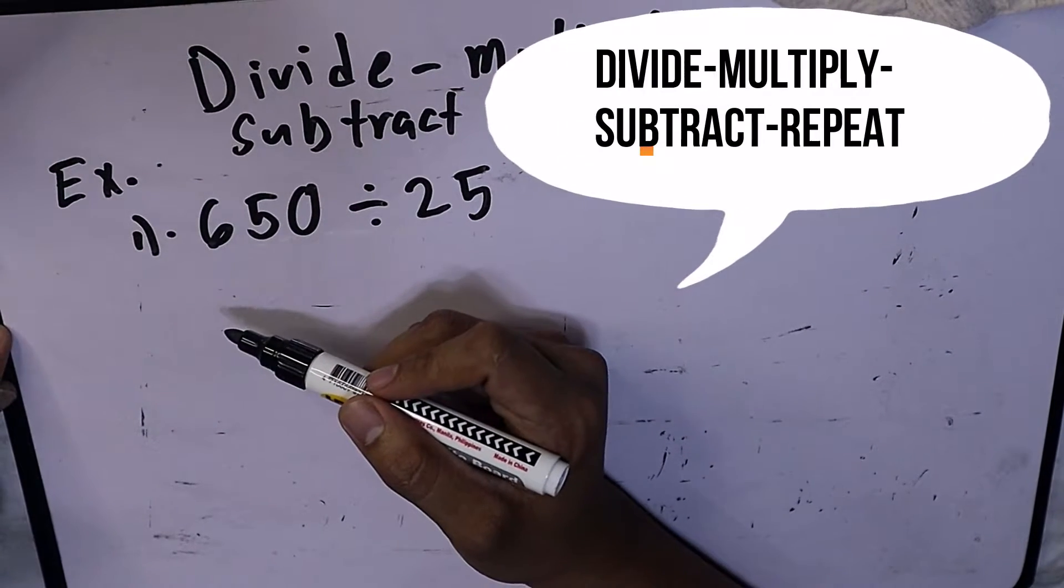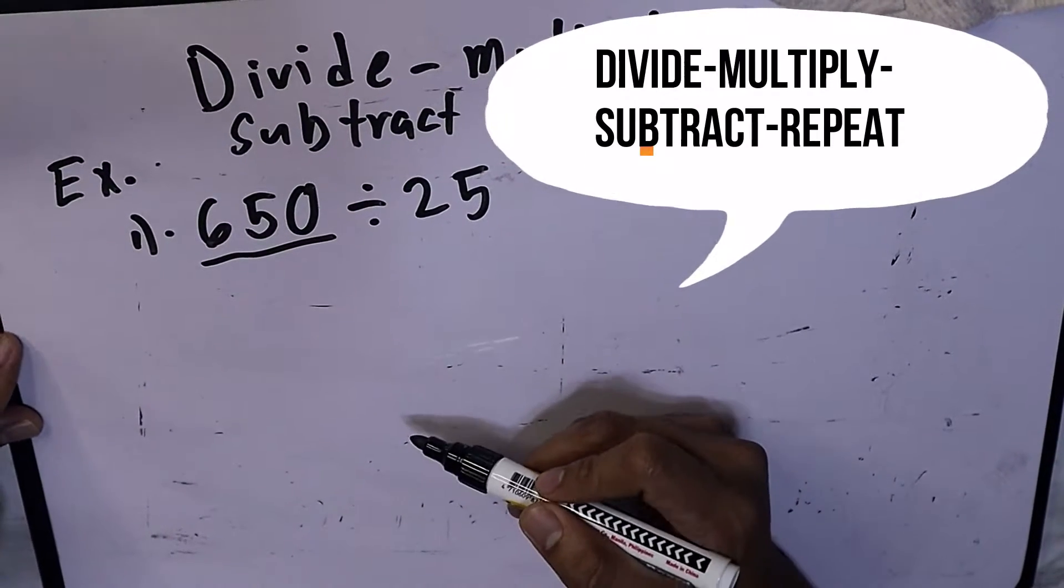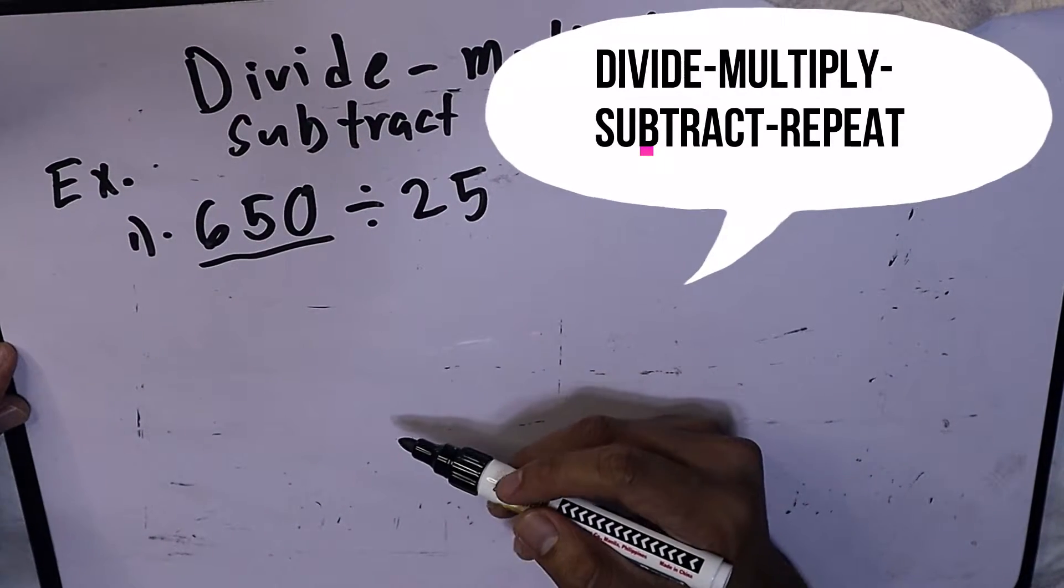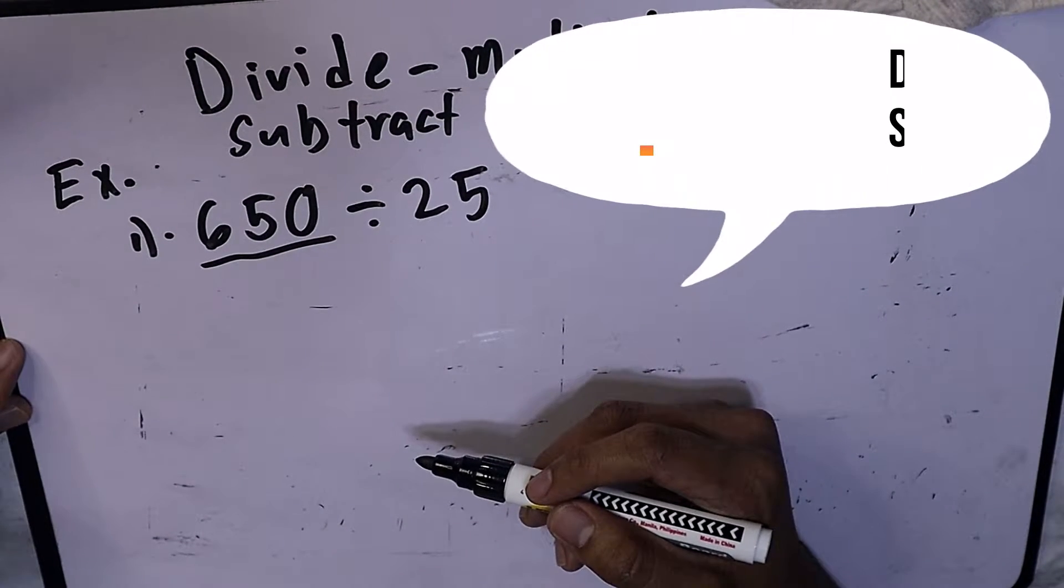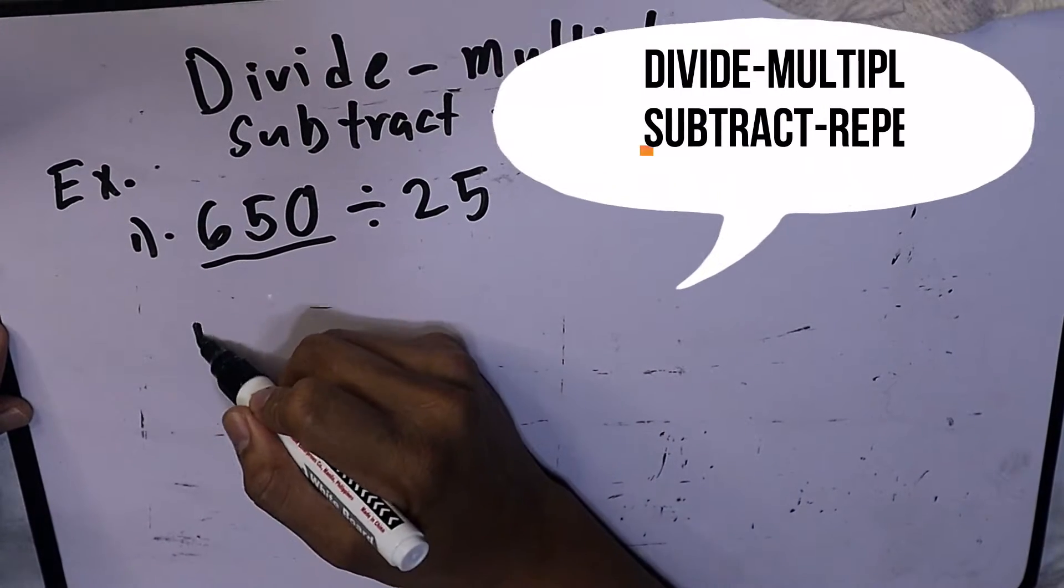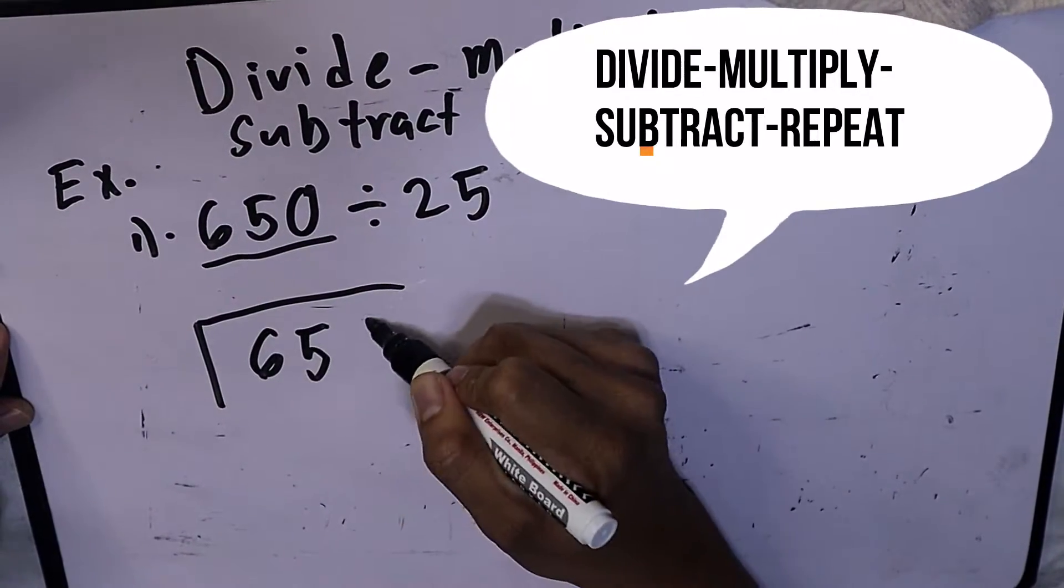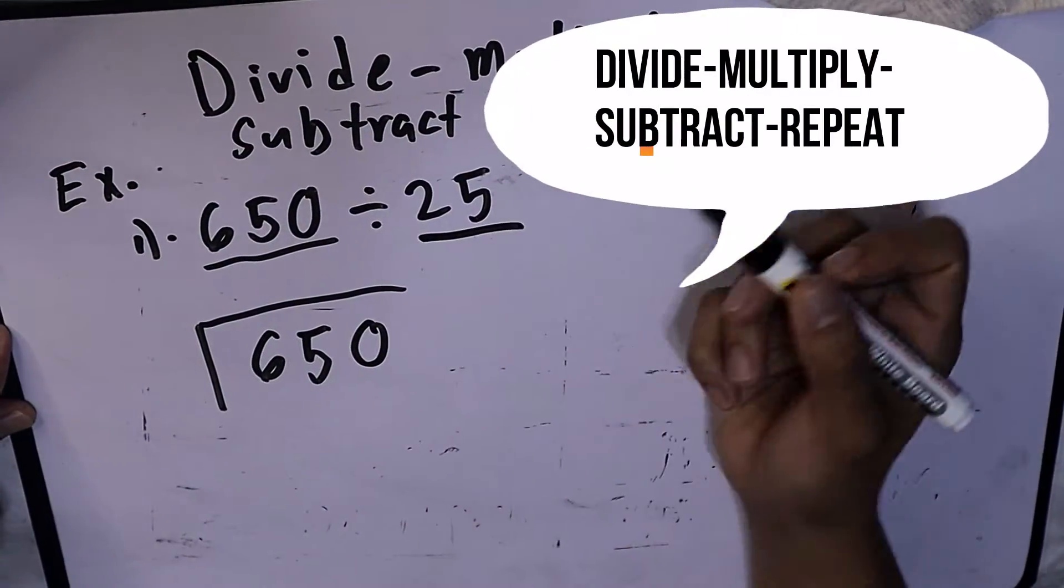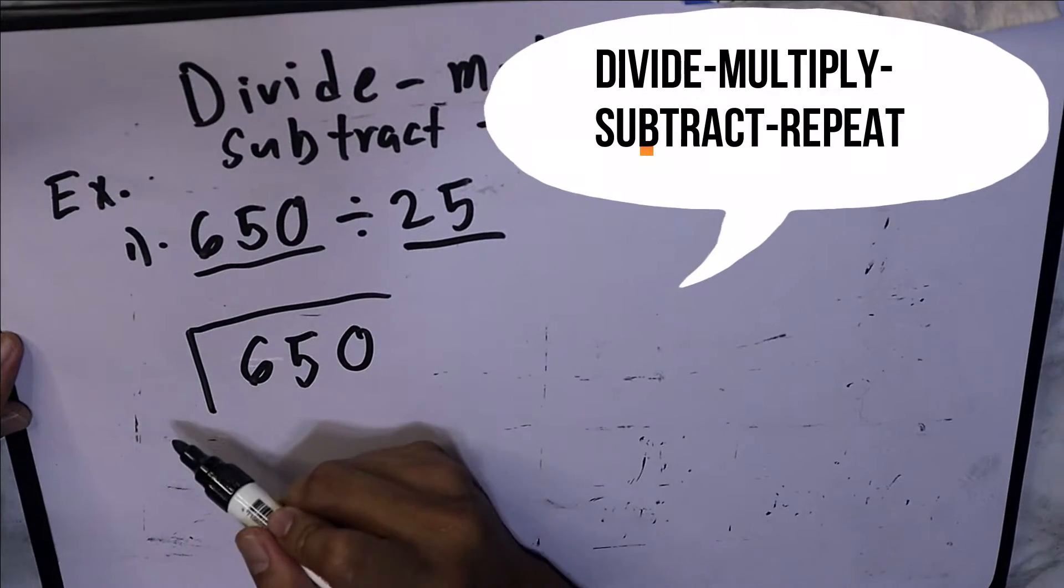Let's have this example: 650 divided by 25. Let's identify first which is the dividend and the divisor. 650 is our dividend, which is inside the table of our division, and 25 is our divisor, which will be on the outside of the table.